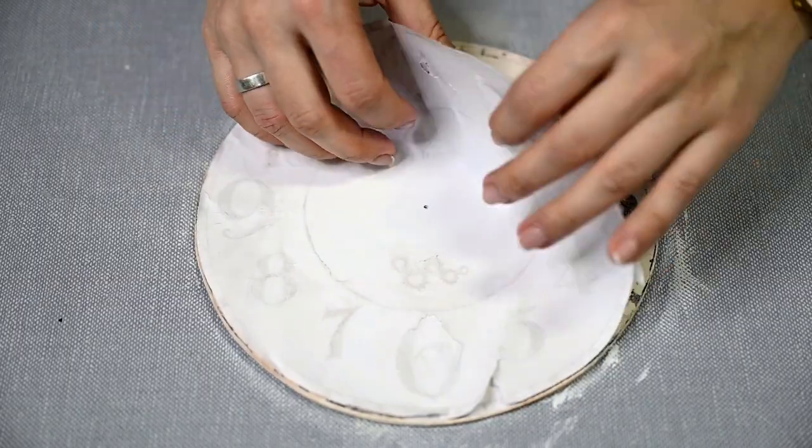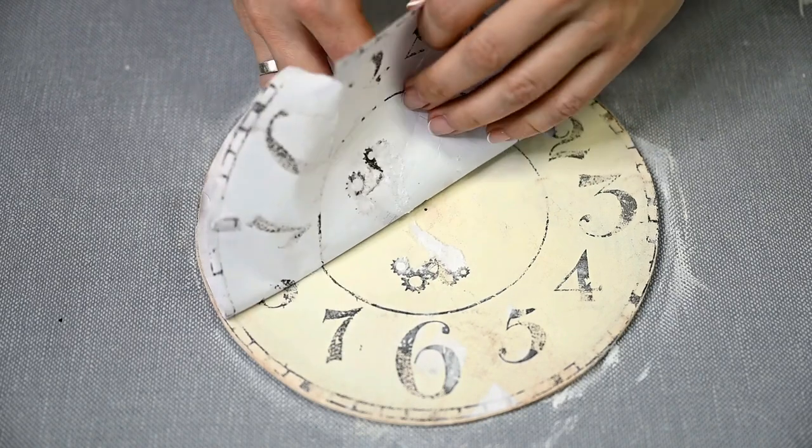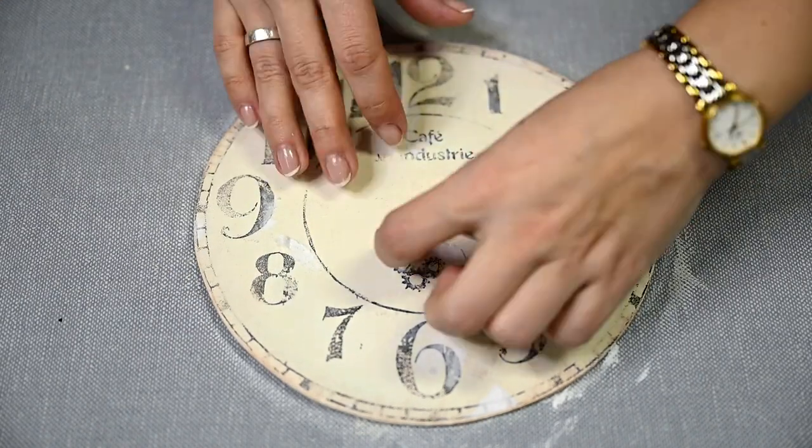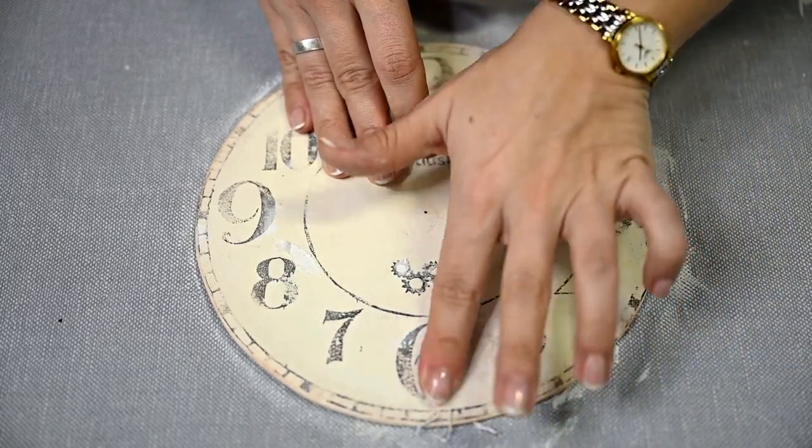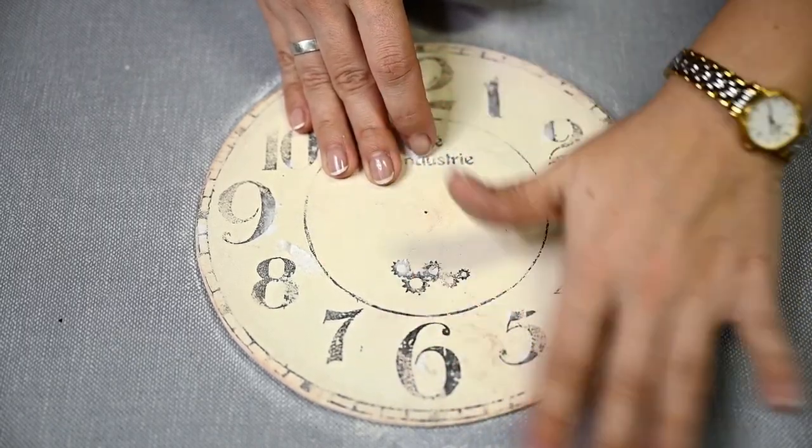Take off the paper and here is the most vintage dial ever. If anywhere the paper has passed along with the paint, you can gently roll it up with a damp finger.